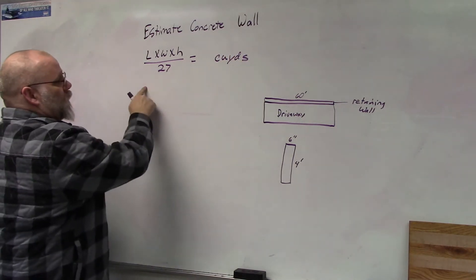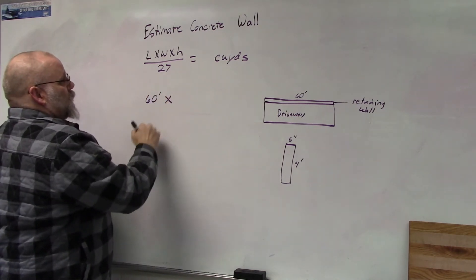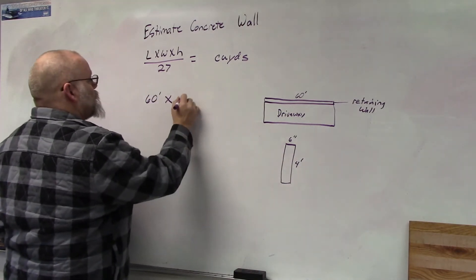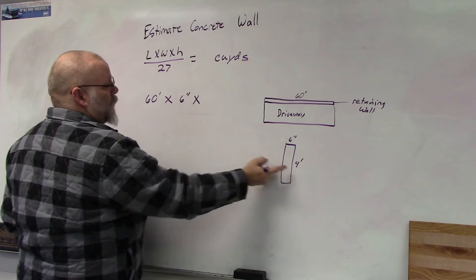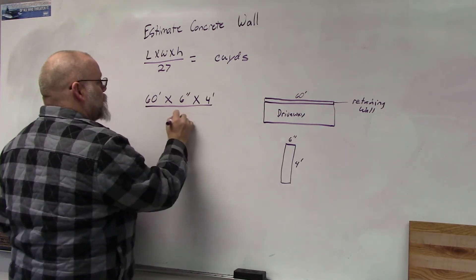So the length of our retaining wall is 60 feet. The width of our retaining wall is six inches and the height of our retaining wall is four feet, divided by 27.